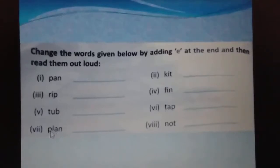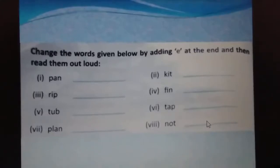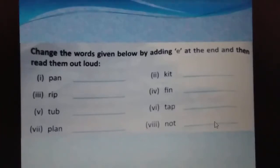Next word is P-L-A-N — 'plan.' When we add E, the word becomes 'plane' — aeroplane. Next word is N-O-T — 'not.' When we add E, the word becomes 'note.' Note means special information you write down, like a PTM note in your diary for a parent-teacher meeting.